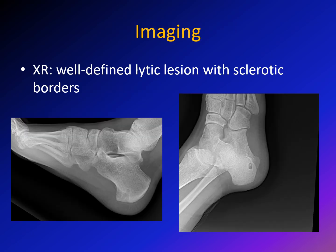Imaging includes X-rays, MRI, and sometimes CT. Brodie's abscess appears as a small osteolytic lesion surrounded by a sclerotic border. You can see the osteolytic lesion with sclerotic borders on the oblique view, with a possible area of central necrosis. The surrounding sclerosis is much less than what you would see in osteoid osteoma.